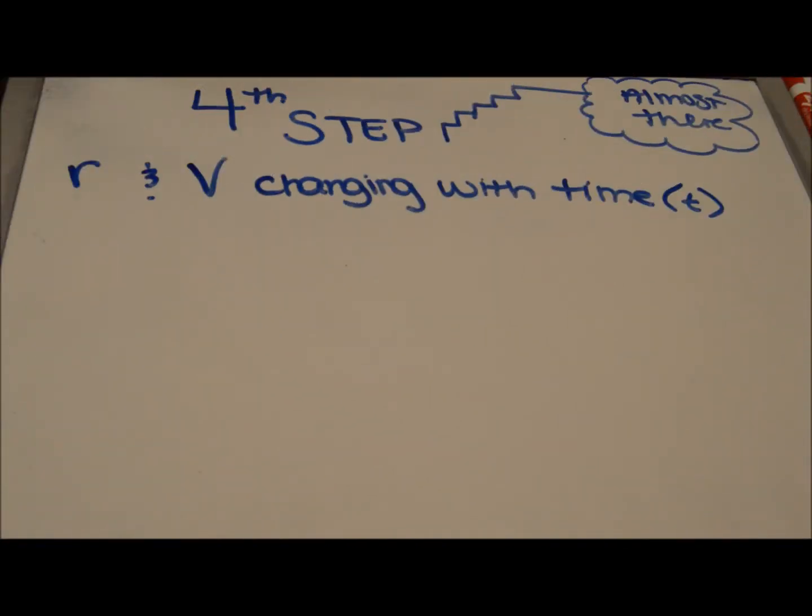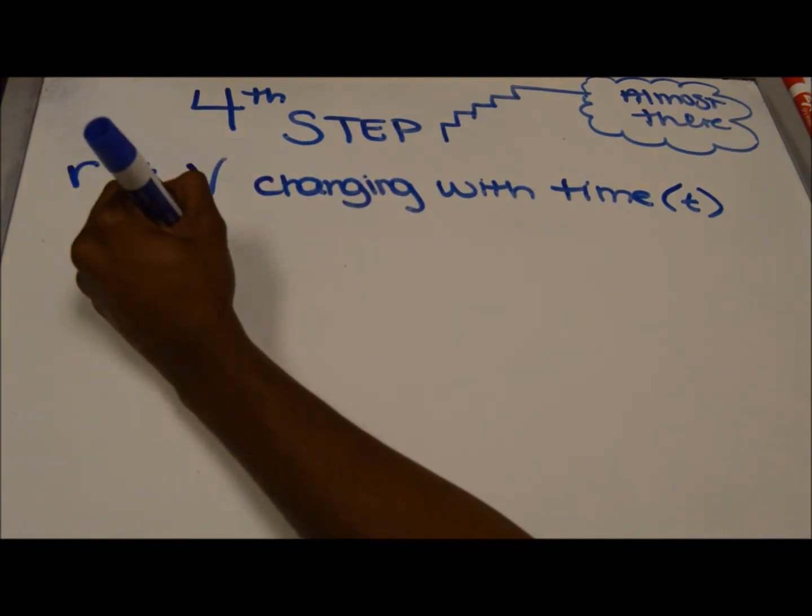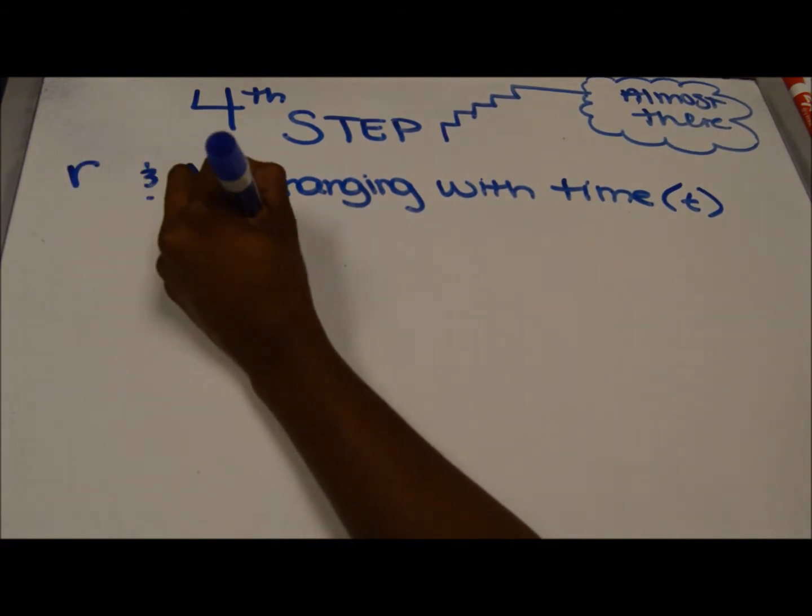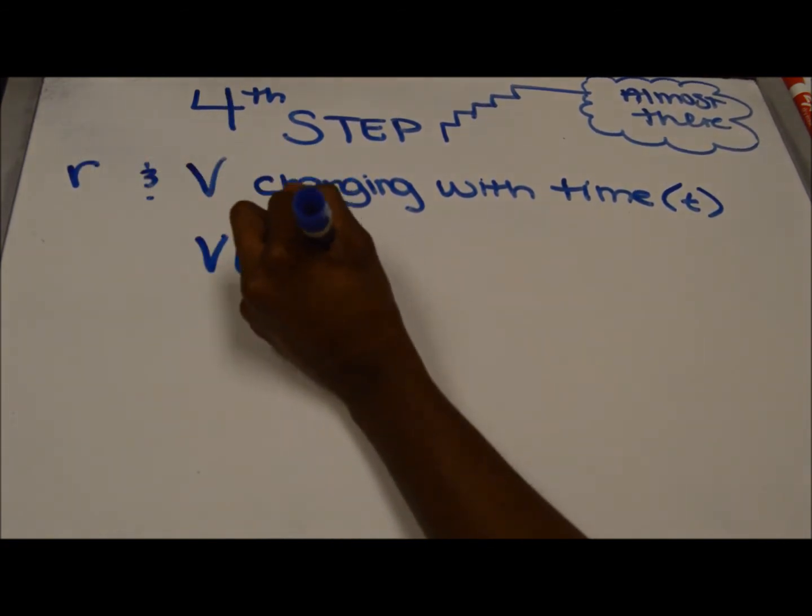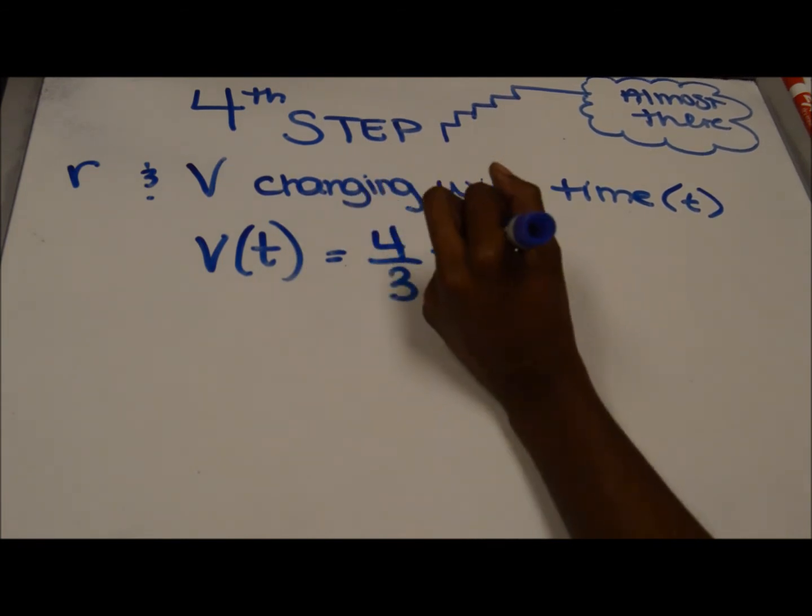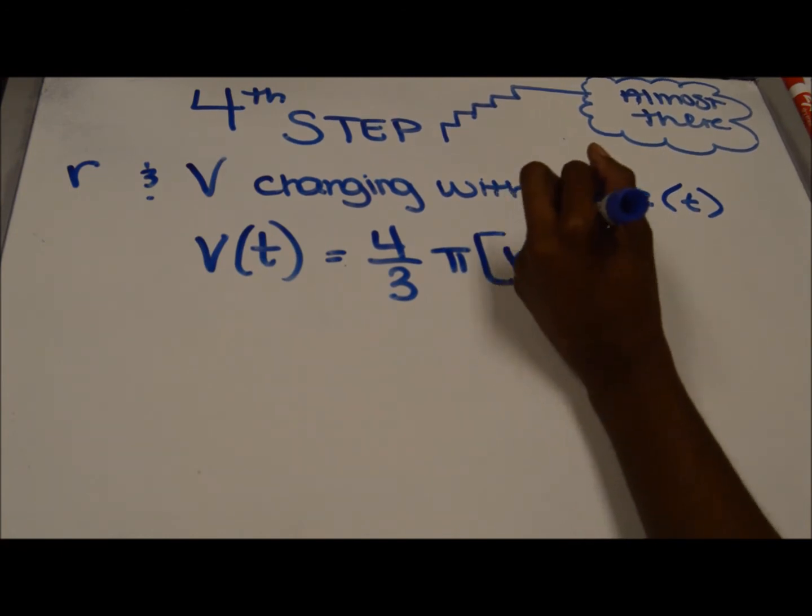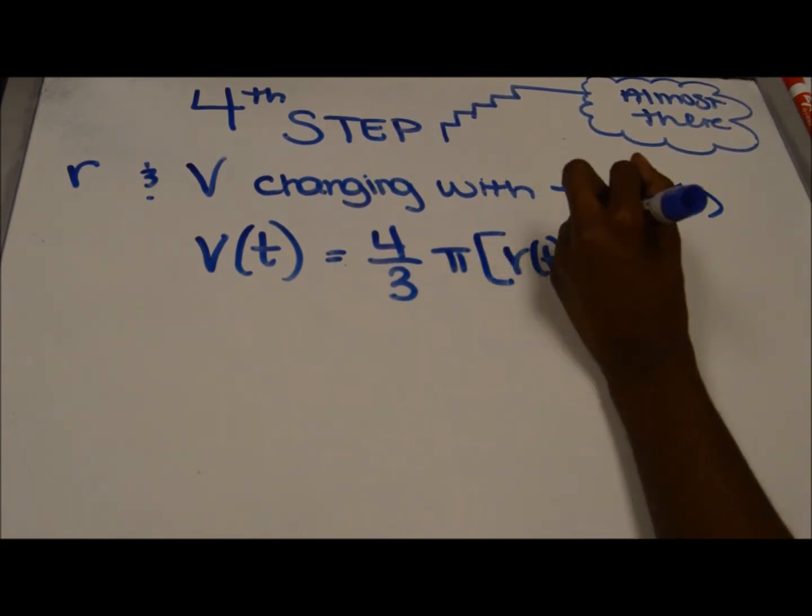In step 4, you are to identify the equation that relates to the variable. So within this equation, the r and the v are changing with time. Therefore, the equation would be v times t equals 4 over 3 pi multiplied by r times t cubed.